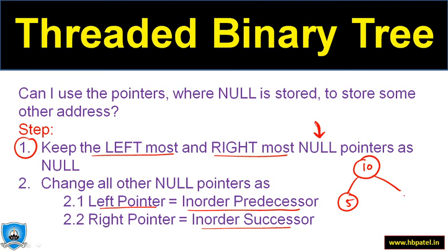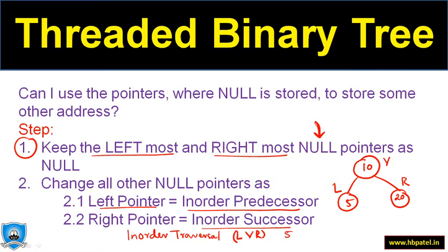For example, if I have a tree with 10 as root, 5 as left child, and 20 as right child, then in-order traversal gives L-V-R: 5, 10, 20. For node 10, the in-order predecessor is 5 and the in-order successor is 20.